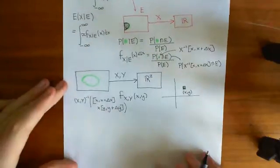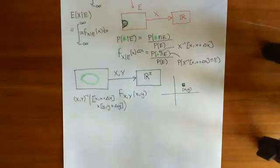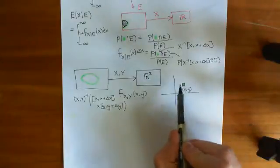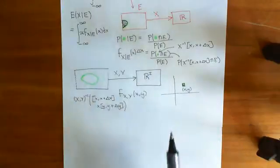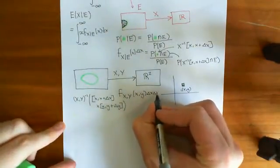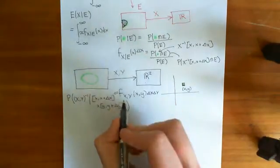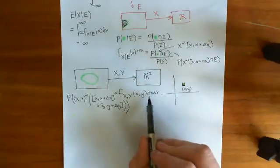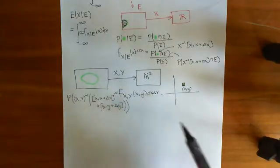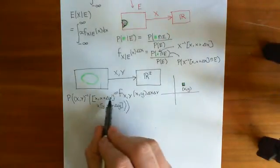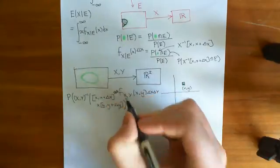If you make the side lengths delta x and delta y very small, then the probability of this pre-image should approximately equal the joint probability density function evaluated at (x, y) times delta x times delta y. That's the concept of the probability density function — it's not the probability itself, it's what you multiply by some area to get probability. This is a good approximation as delta x and delta y converge to zero.